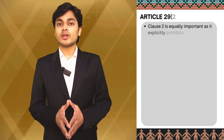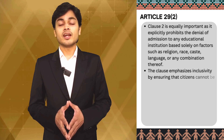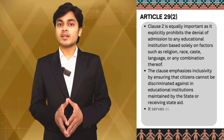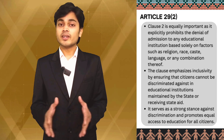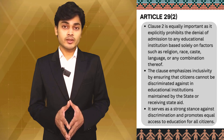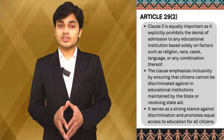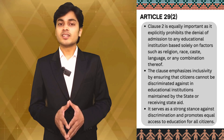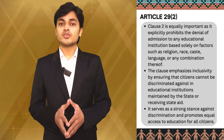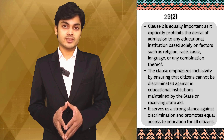Clause 2 of Article 29 is equally significant. It explicitly states that no citizen shall be denied admission to any educational institution maintained by the state or receiving aid out of state funds on grounds only of religion, race, caste, language, or any of them. It's a powerful statement against discrimination in educational institutions, promoting inclusivity for all citizens.